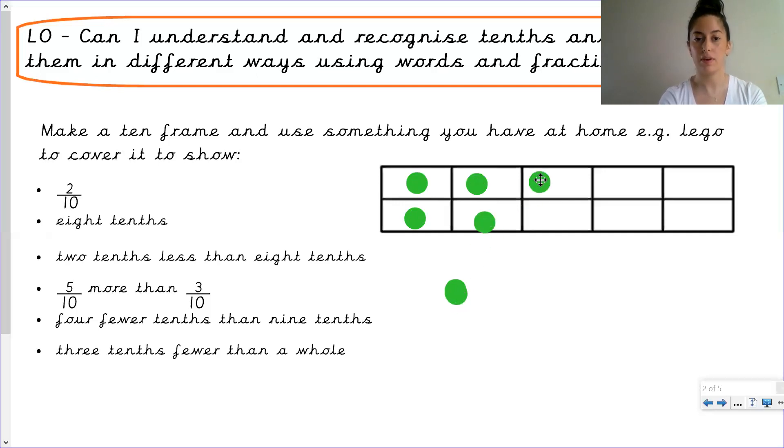Four, five, six, seven, eight. It says two tenths less than eight tenths. I've got eight tenths here. What would be two tenths less? So I'm going to take away one tenth and then another tenth I've taken away two tenths. So how much do I have left? One, two, three, four, five, six. Six tenths.